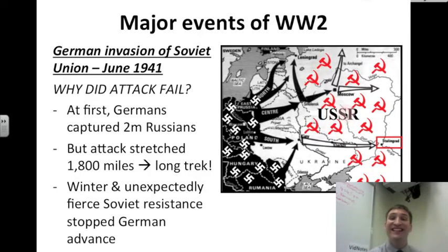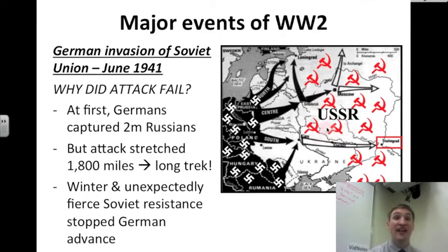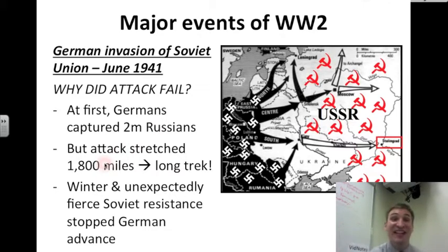Why did the German attack fail? At first, it didn't — the Germans captured 2 million Russians. But they did not take into account how large the USSR is. It stretched 1,800 miles, which is like traveling from here to Dallas, Texas. That's a long trek.